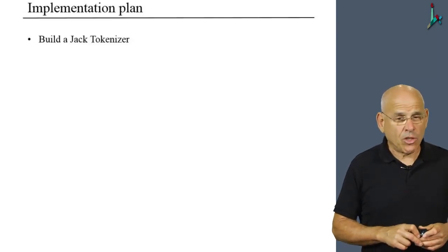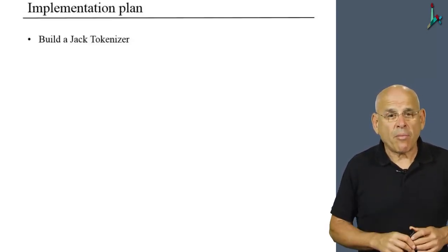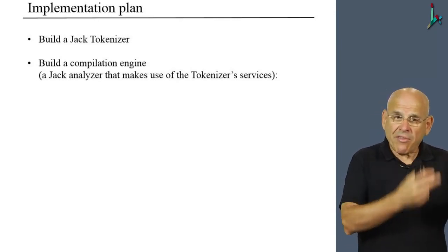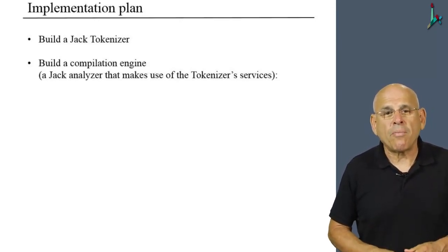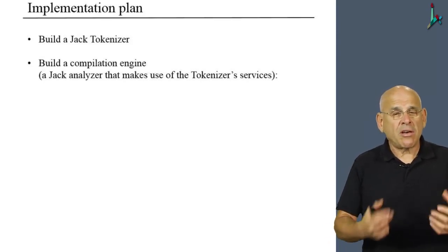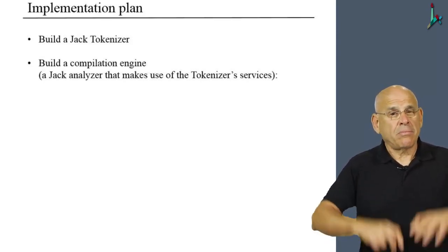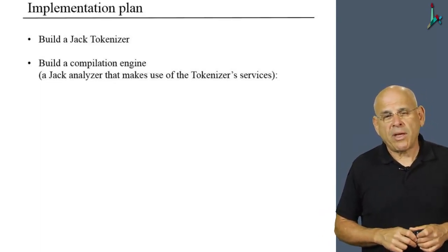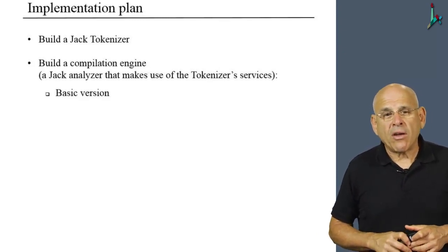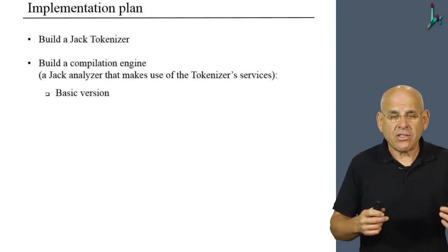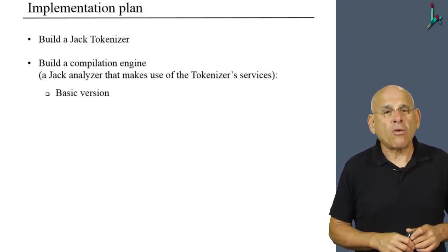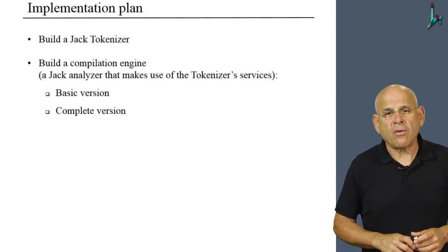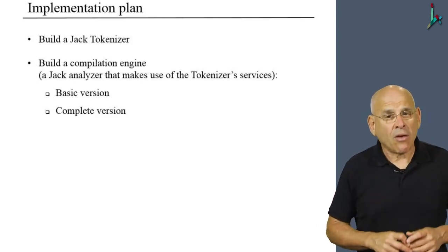Here is the implementation plan. First of all, we're going to develop a tokenizer, which is a very well-defined and relatively simple undertaking. Then, once we develop the tokenizer, we're going to move on and develop a compilation engine. We use the term compilation engine to describe a syntax analyzer that uses the services of the tokenizer that we developed before. We're going to develop this compilation engine in two stages. First, we'll build a basic program which is relatively simple, and then we're going to extend it into a full-blown syntax analyzer.